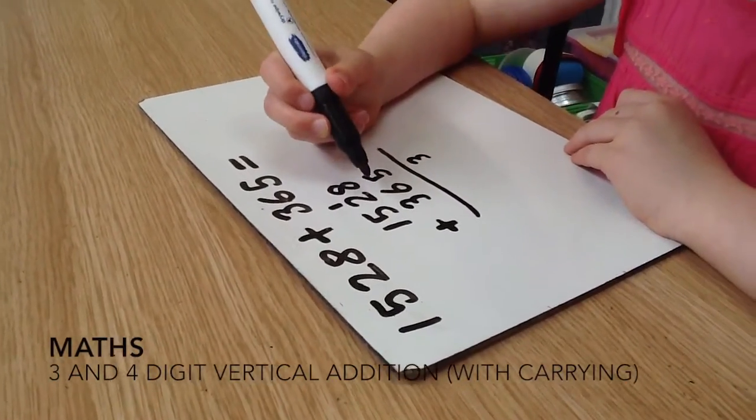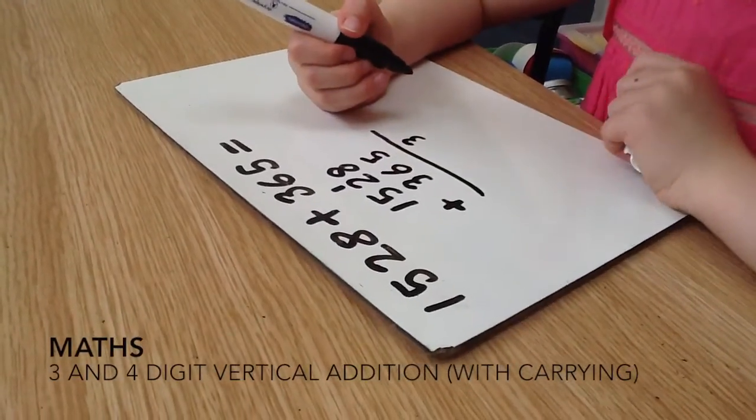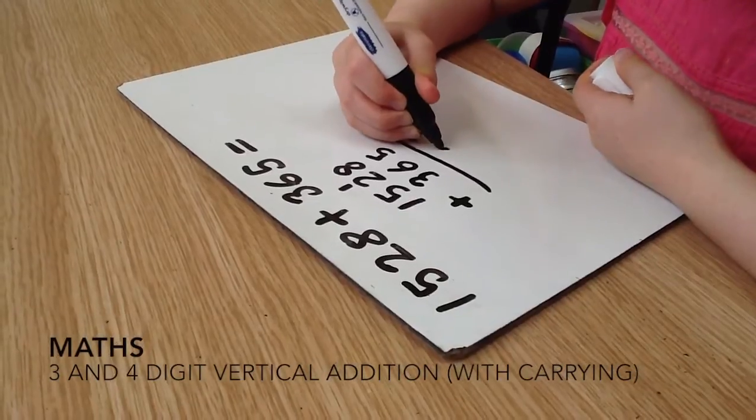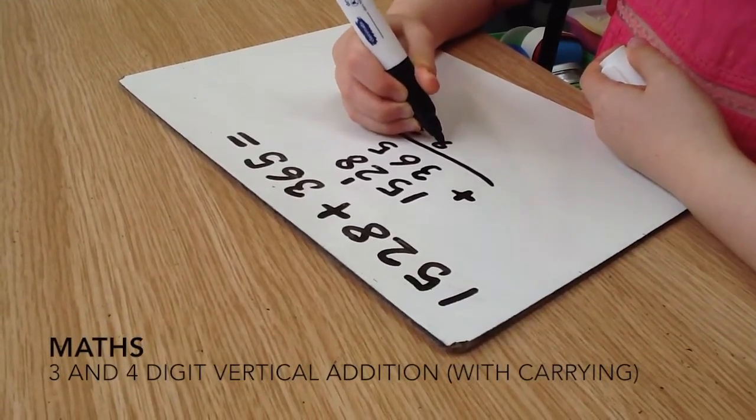twenty and sixty which is ninety. You put the nine there.